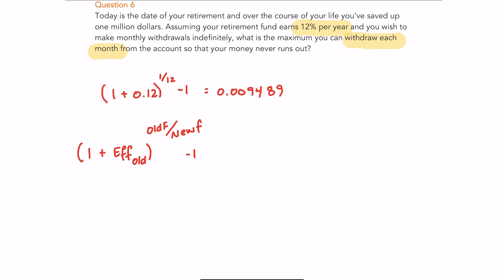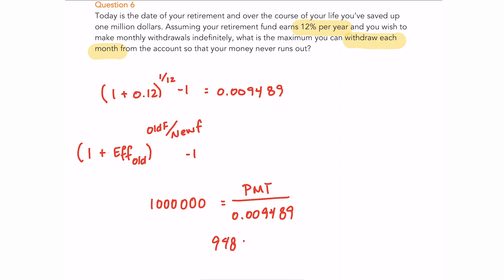With $1,000,000 as the present value, we solve for the payment: PV = Payment / monthly rate, so Payment = $1,000,000 × 0.009489 = $9,489 per month. Note that with large numbers like a million it's important to keep as many decimal places as possible — with more decimal places you'd get even the pennies correct, but six decimal places is sufficient here.